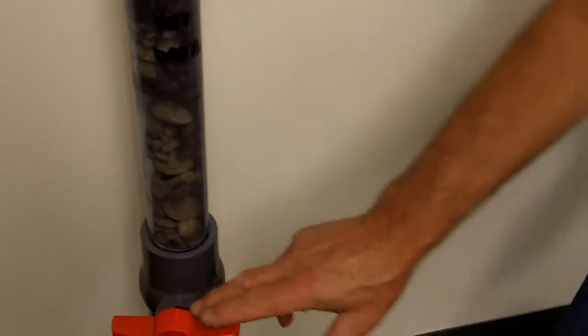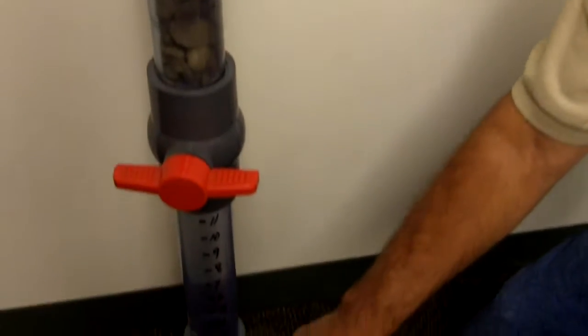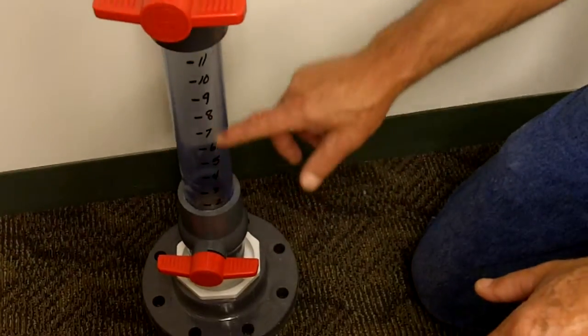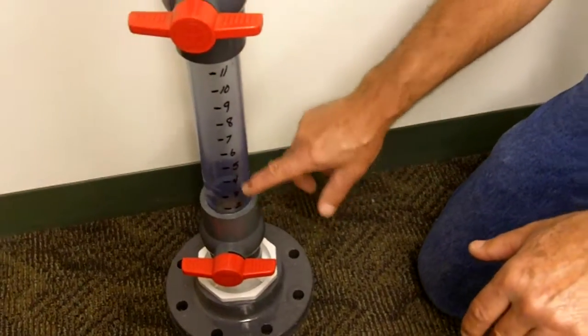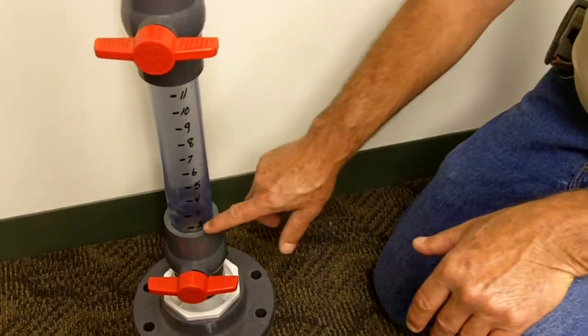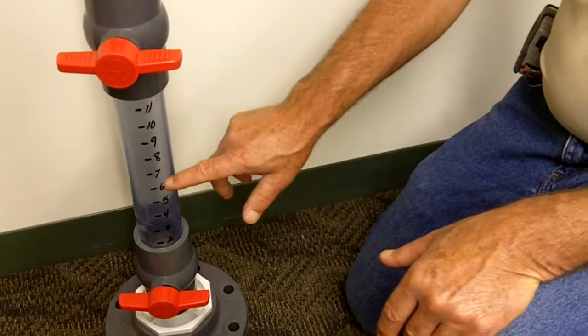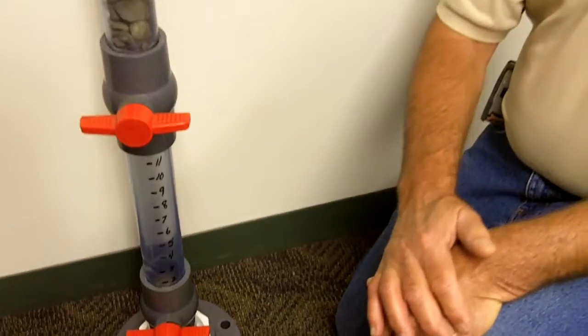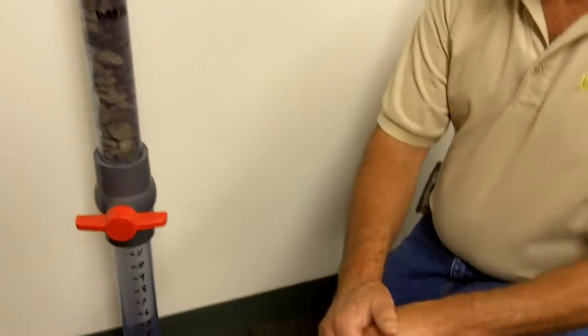If you notice here, we have a valve which is closed and another one down here closed. We've graduated this cylinder to indicate just how many inches of water we're going to accumulate at the end of the demonstration.